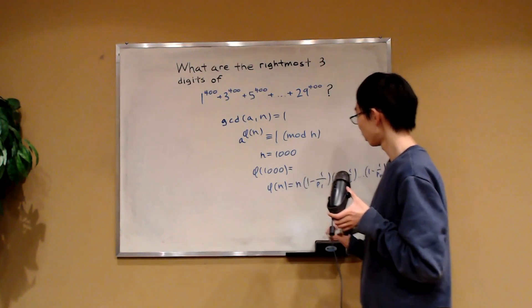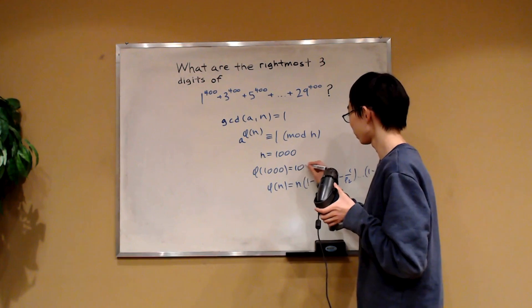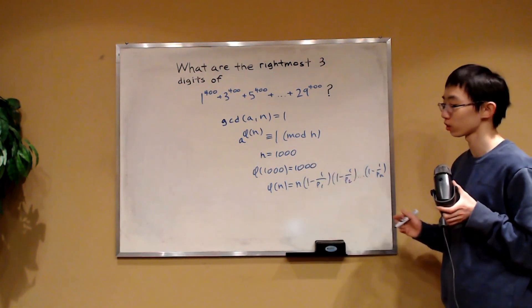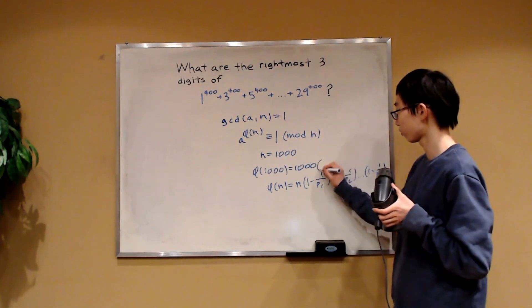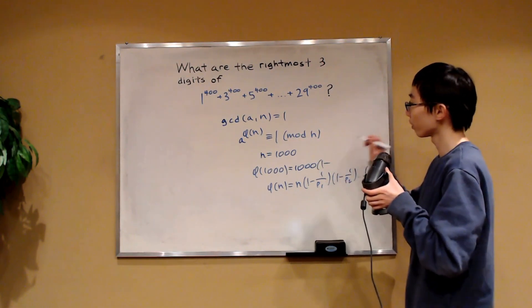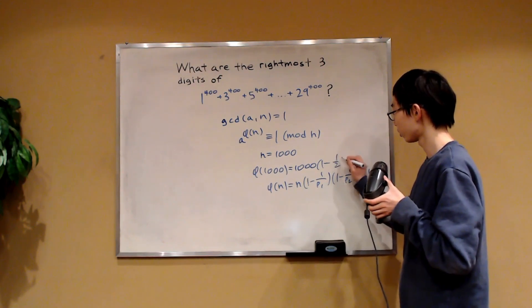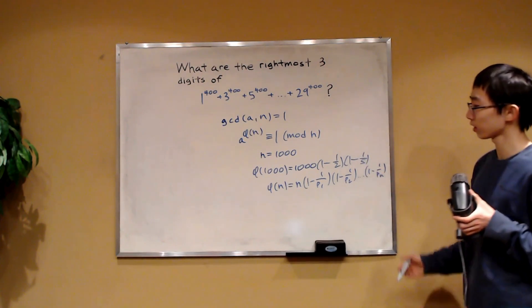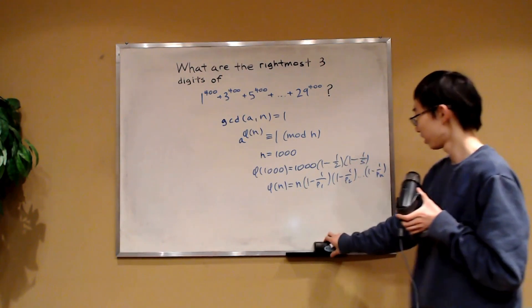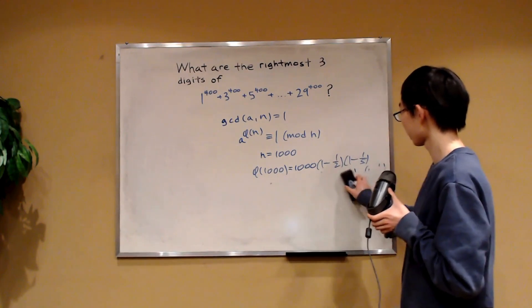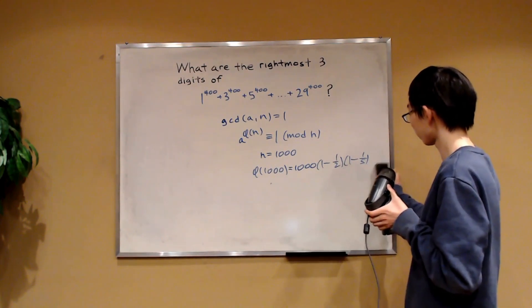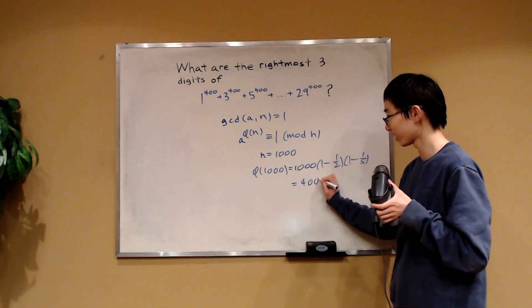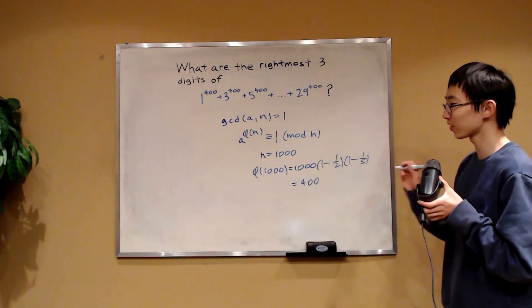It's equal to 1,000, and then the only prime factors of 1,000 are 2 and 5. So we just have 1 minus 1 over 2 and 1 minus 1 over 5. So this is phi of 1,000. And if we were to actually evaluate what we just wrote, this over here actually comes out to be 400. Isn't that cool?